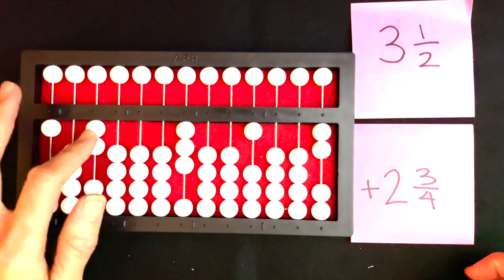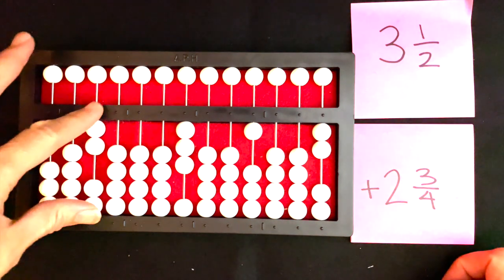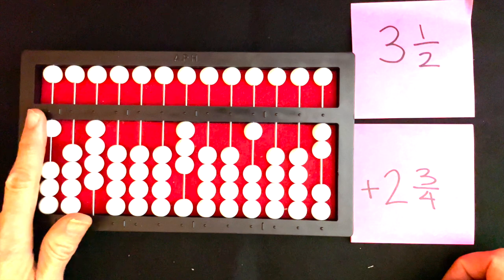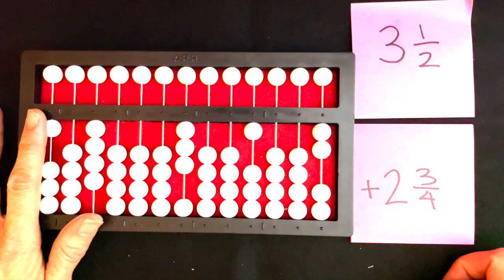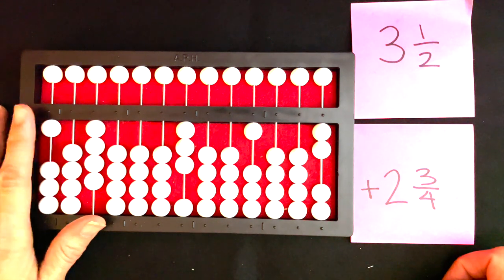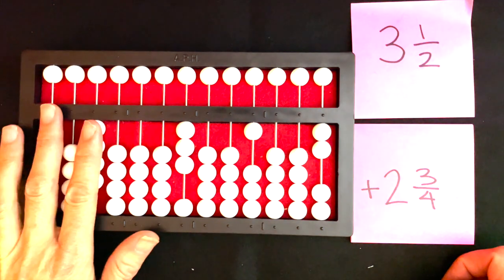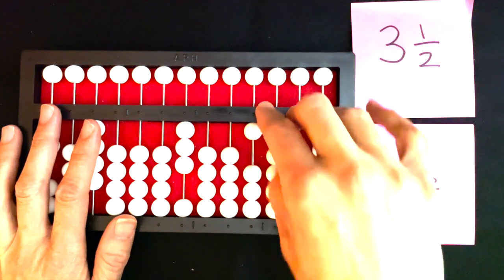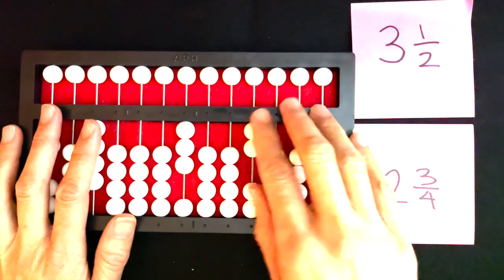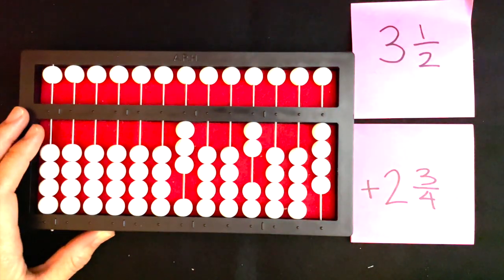I'm going to multiply my denominator by two so I can get to the four. Two times two is four, and then I'm going to multiply my numerator because the value of the fraction stays the same when you multiply it by the same number, so two over two. I'm going to multiply my one by two and I get two. So I have two-fourths. I'm going to change my fraction to two-fourths and clear the fraction on my left-hand side of my abacus.